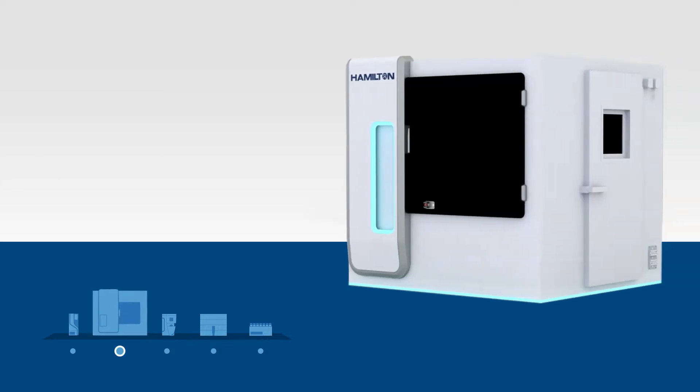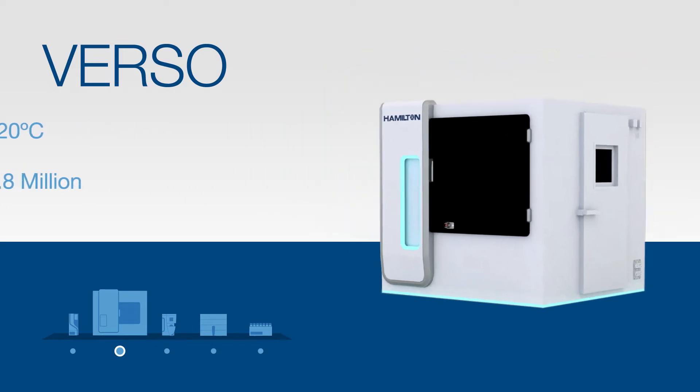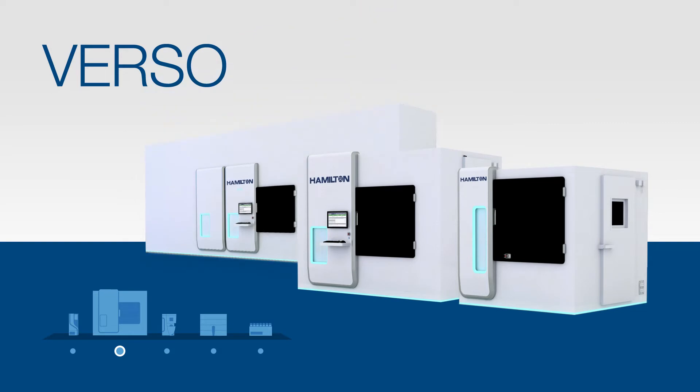We'll now move on to Verso, a scalable medium to large capacity high throughput machine for samples stored at ambient to negative 20 degrees Celsius. Sample storage capacities for Verso can range all the way into the millions thanks to the ability to add modules. The Verso shown here is an example of one module, but you can add more modules to increase capacity to fit your needs.